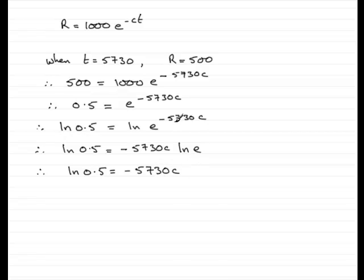You might have known to go from here straight down to this result here. That's fine, okay? And miss out these stages. It's a standard result, so you could go then from there to there. Okay, to get to C now, all I need to do is to divide both sides by minus 5,730. So we have C is equal to minus the natural log of 0.5 divided by 5,730.